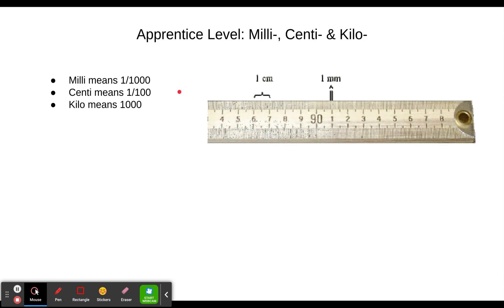So there's three levels to this concept builder. The first one's apprentice. It's titled milli, centi, and kilo. And in this one you're going to need to know that milli means one over one thousand or one one thousandth. That centi means one one hundredth or one over a hundred. And kilo means a thousand.